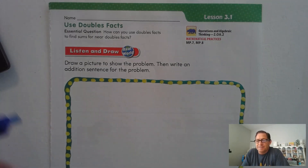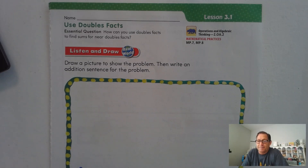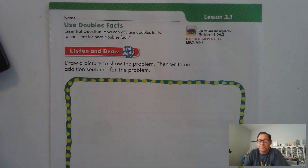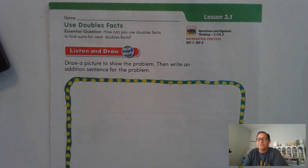What that basically means is, let's say we have 2 plus 3. Well, a double fact that we know is 2 plus 2 is 4. And so we just go 2 plus 2 plus 1 extra if we're doing 2 plus 3.